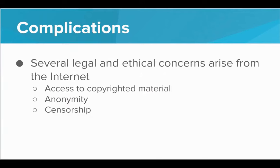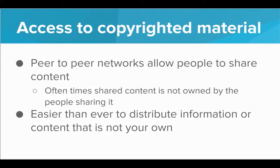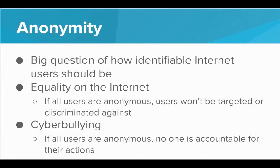In addition to all these great things, there are complications that come with the Internet. Legal and ethical concerns include access to copyrighted material, anonymity, and censorship. Peer-to-peer networks allow people to share files — fine if they own the content, but often the content being shared is copyrighted work or software that doesn't belong to the sharer. On anonymity: it supports equality since users won't be targeted based on gender or race, but complete anonymity promotes cyberbullying — if no one is accountable for their actions, we see some pretty hateful behavior online.